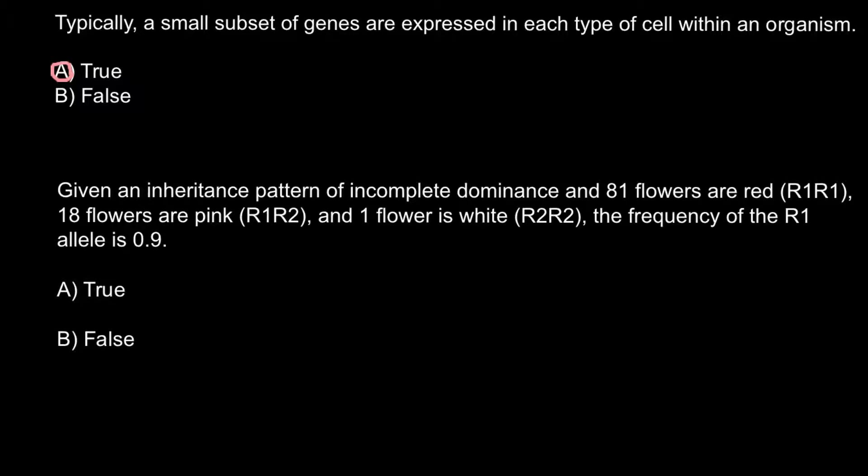The next question: Given an inheritance pattern of incomplete dominance, 81 flowers are red (genotype R1R1), 18 flowers are pink (genotype R1R2), and one flower is white (genotype R2R2). The frequency of the R1 allele is 0.9. We have to choose whether this is a true or false statement.